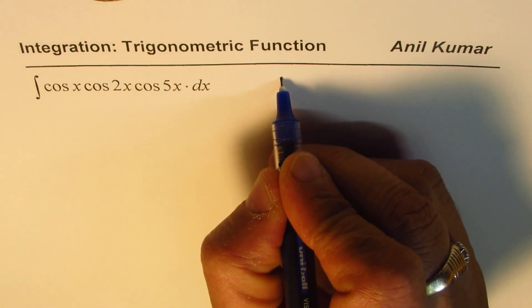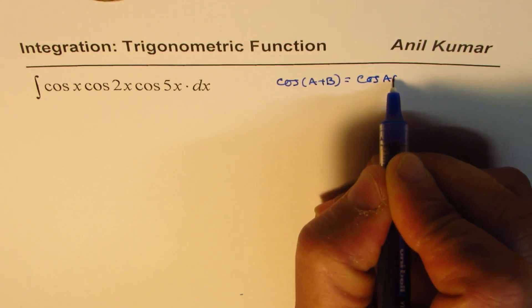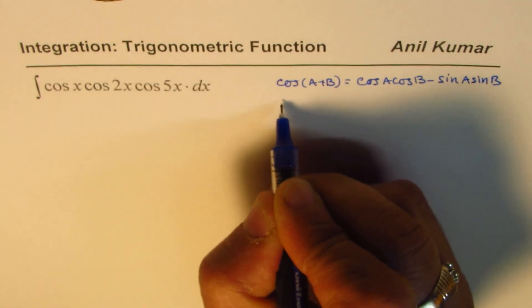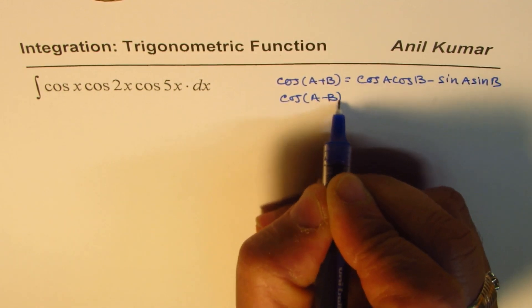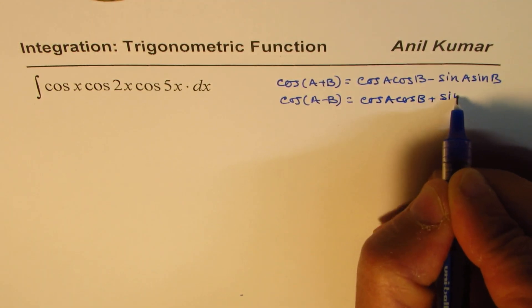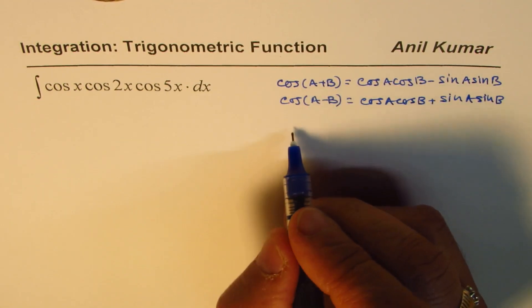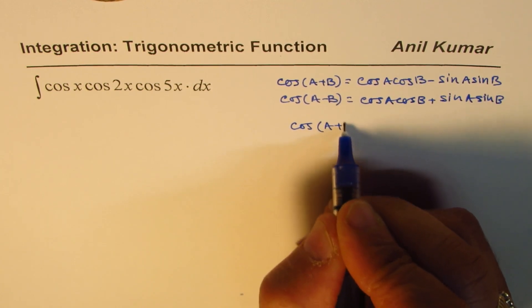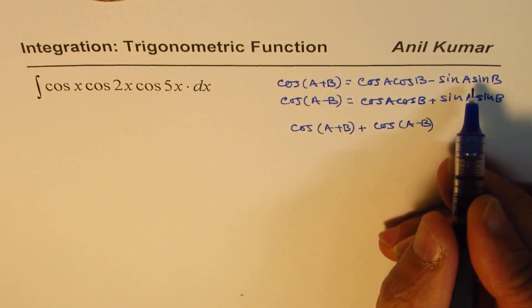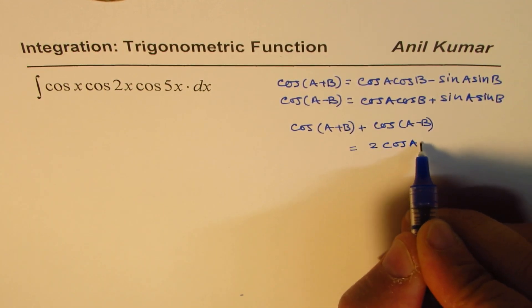The idea is that we have the formula cos(a+b) which is cos·a·cos·b minus sin·a·sin·b. And cos(a-b) can be written as cos·a·cos·b plus sin·a·sin·b. So when you add these two — that is cos(a+b) plus cos(a-b) — the sine terms cancel off and you get two times cos·a·cos·b.